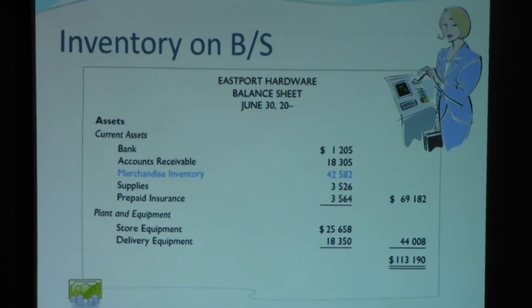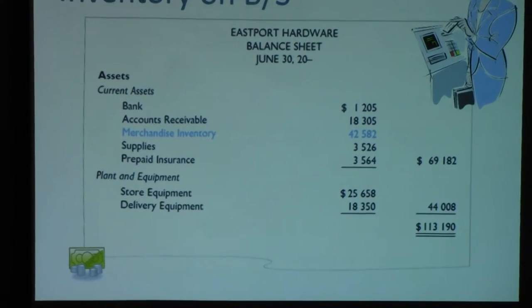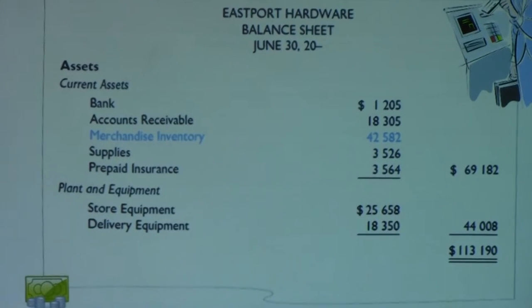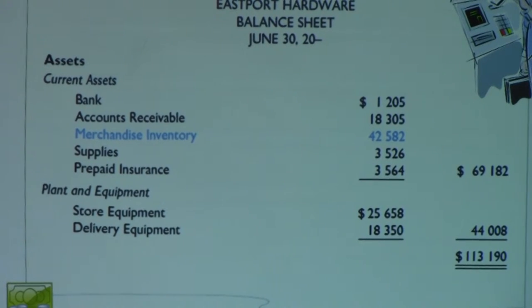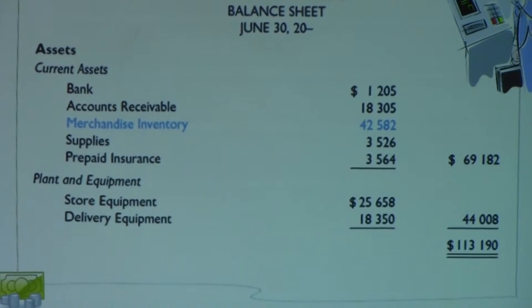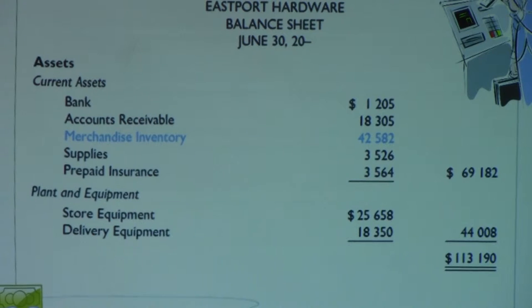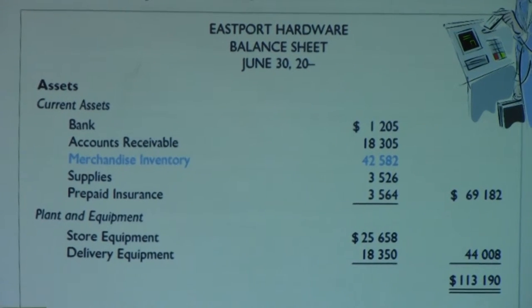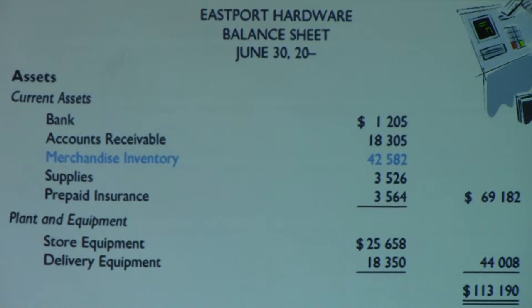The next couple of slides show how inventory accounts have changed the look of the balance sheet and income statement. Inventory is the third asset in the list — you've got your cash account (bank), then accounts receivable, then merchandise inventory. It is very, very liquid — you can sell it. Liquidity means the quicker you can sell it, the more liquid it's considered. So inventory is very liquid and is considered higher in the order of liquidity than some other assets, making it an important part of the balance sheet.